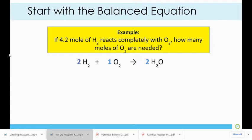So let's look at an example of what a problem might look like. If 4.2 moles of hydrogen reacts completely with oxygen, how many moles of oxygen are needed? Remember that if there's no coefficient in front of oxygen, that means the coefficient is actually one.